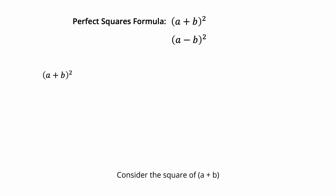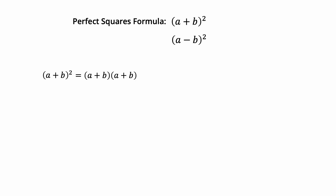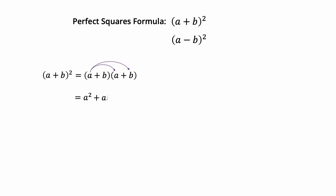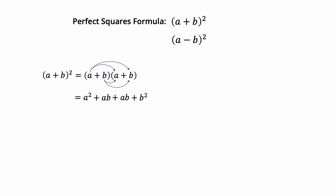Consider the square of a plus b, defined as the product of a plus b and a plus b. We can apply the distributive property to multiply each term in the first expression by each term in the second expression. a times a equals a squared. a times b equals ab. b times a equals ab. And b times b equals b squared. ab plus ab equals 2ab. Simplify to a squared plus 2ab plus b squared.